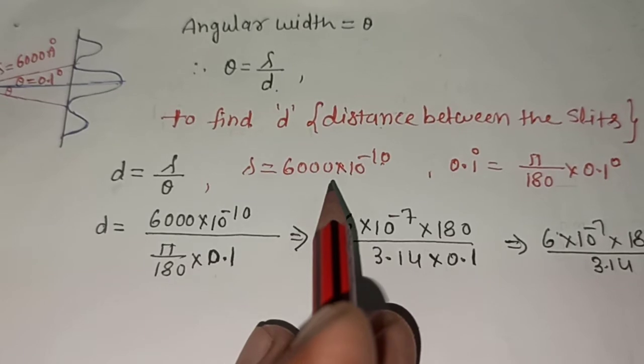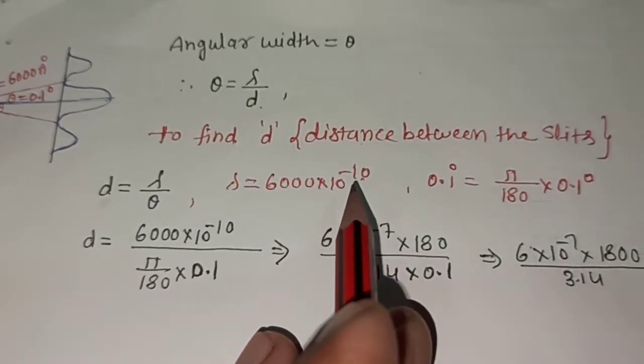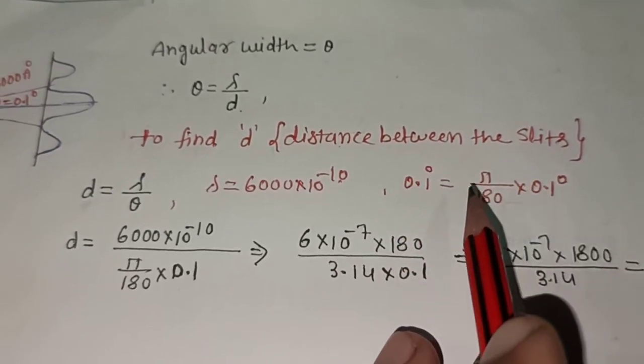So we have to calculate the distance between the slits. 6000 times 10 to the power minus 10, this is the wavelength value. So here you can see 0.1 degree, and you can change this form to radian.